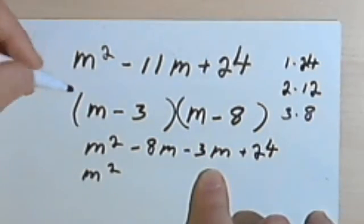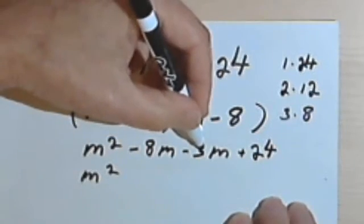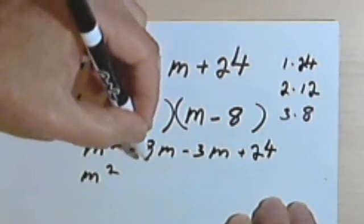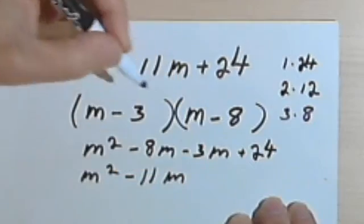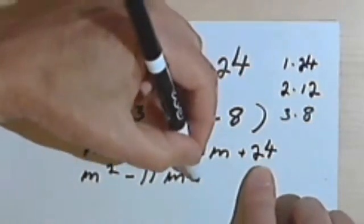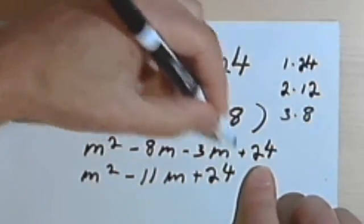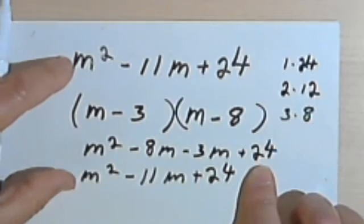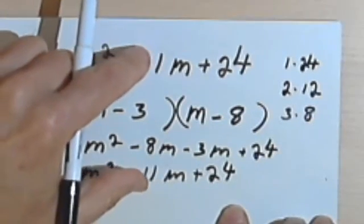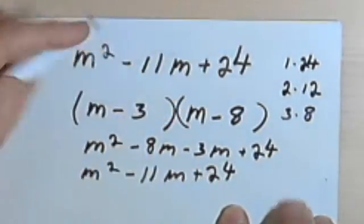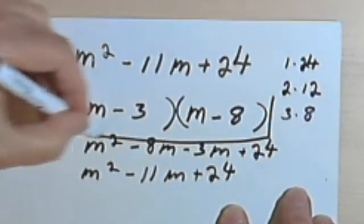I want to combine those two terms in the middle. I'm going to have m squared, negative 8 minus 3 is negative 11, so that's negative 11m. And the 24 remains the same. Let's check carefully. m squared minus 11m plus 24. So this factorization checks out.